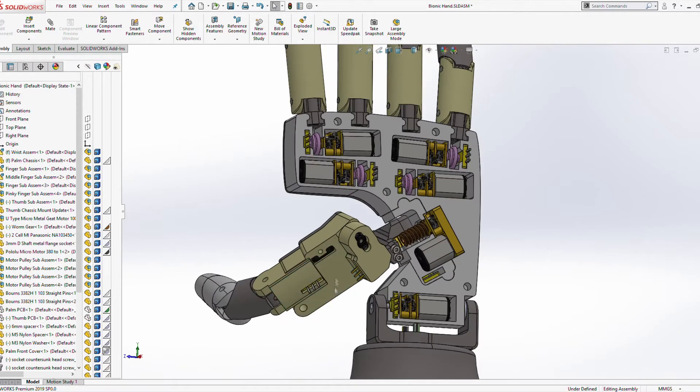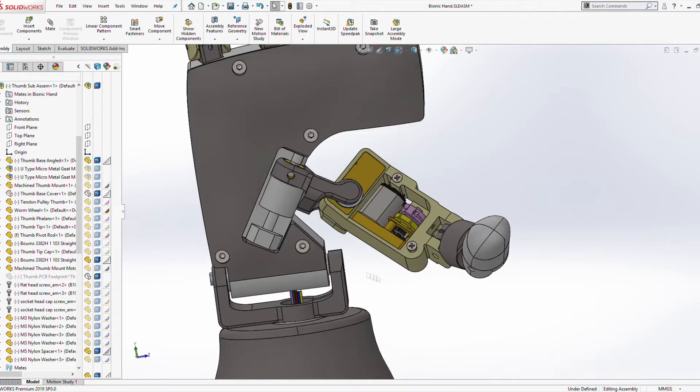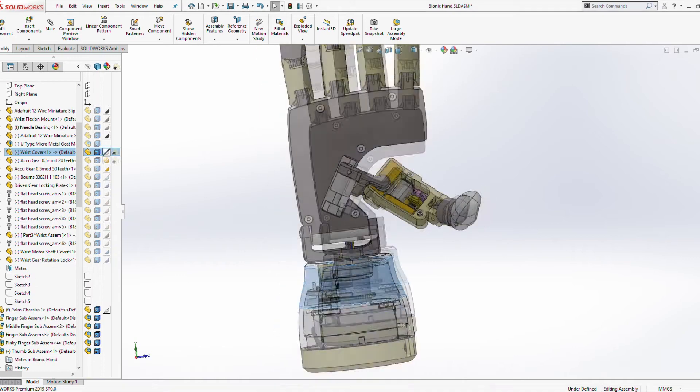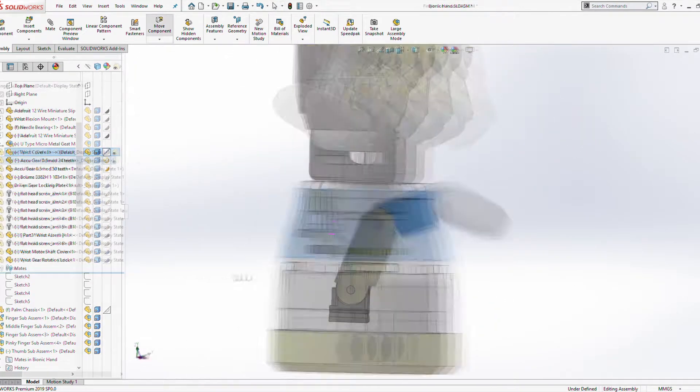So I'm planning on using micro miniature motors in the palm and the thumb base. And the thumb will have three degrees of freedom. I'm also using a motor in the wrist and the wrist will be able to rotate and flex.